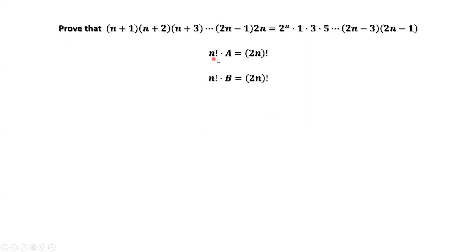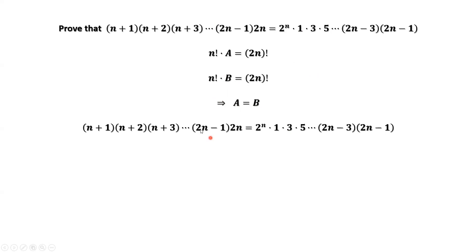In summary, we have n factorial times a equals (2n) factorial, and n factorial times b equals (2n) factorial. Therefore a equals b, which means the left-hand side equals the right-hand side. We have done the proof of this equation. That's all — thanks for watching, and see you next time.